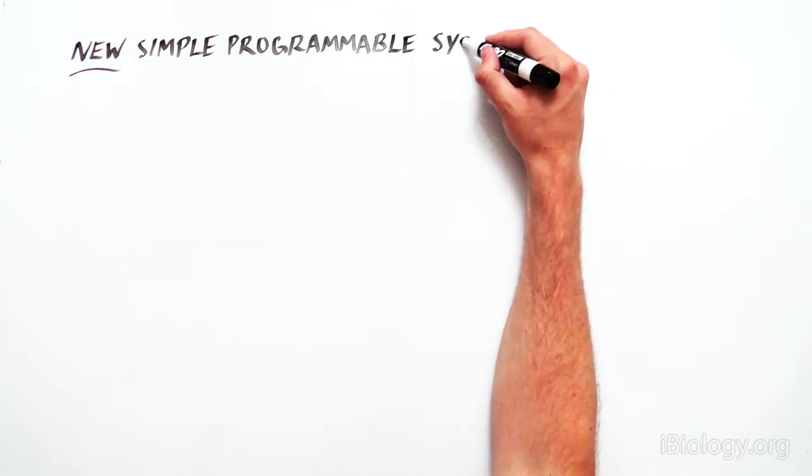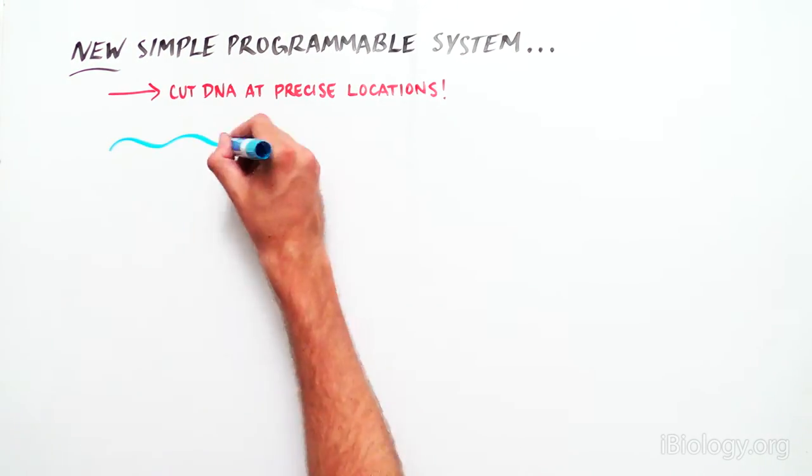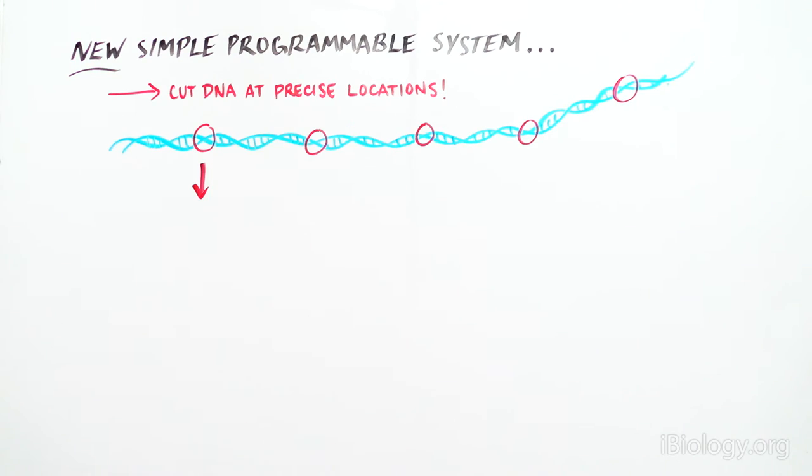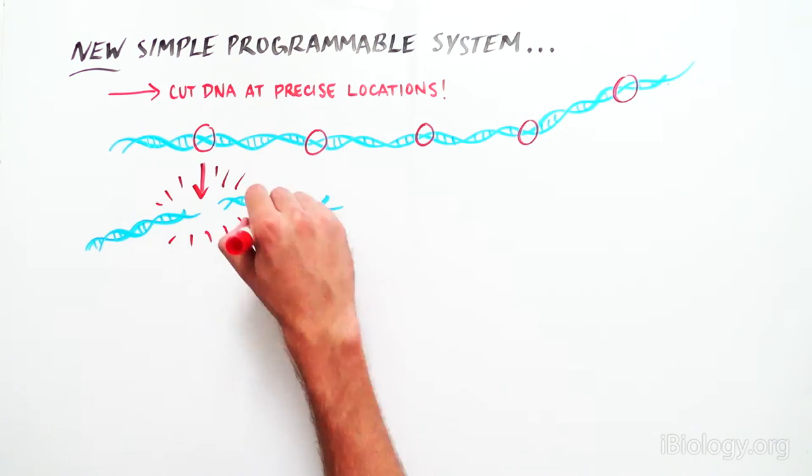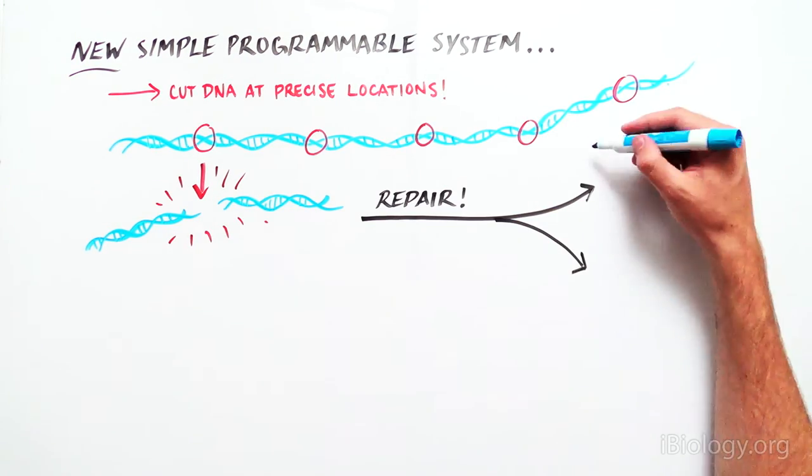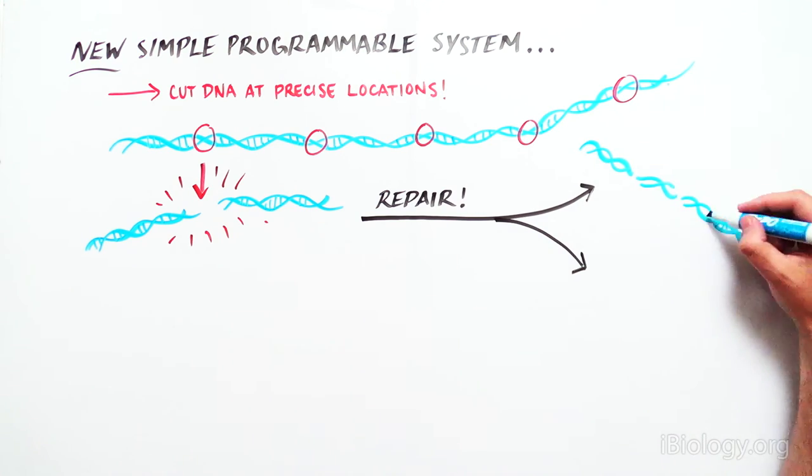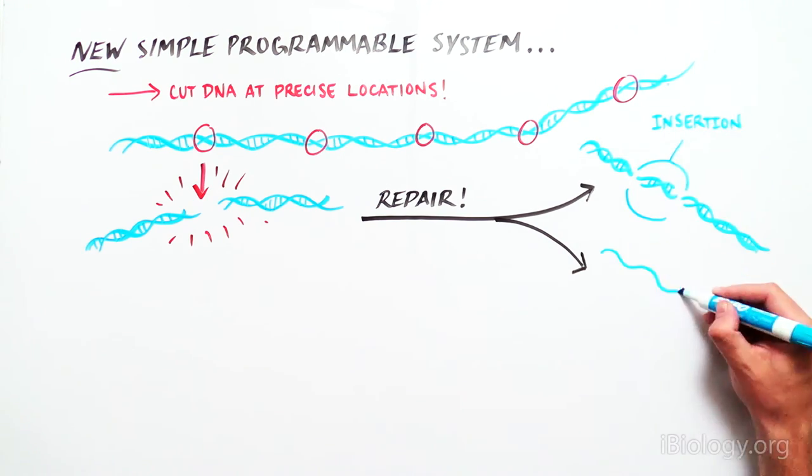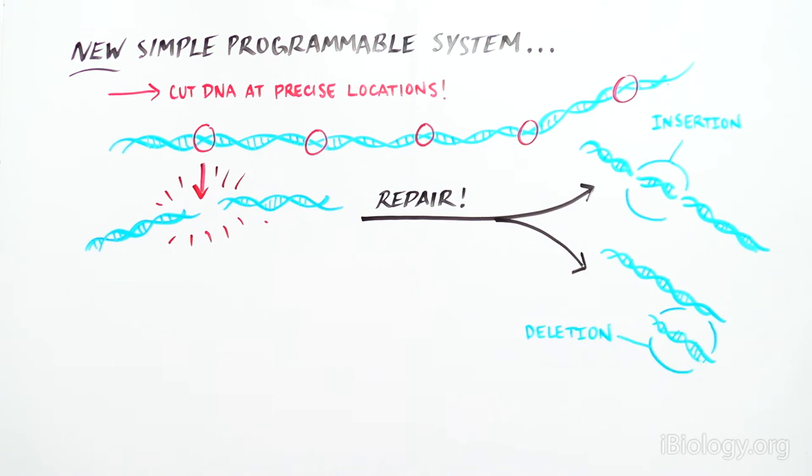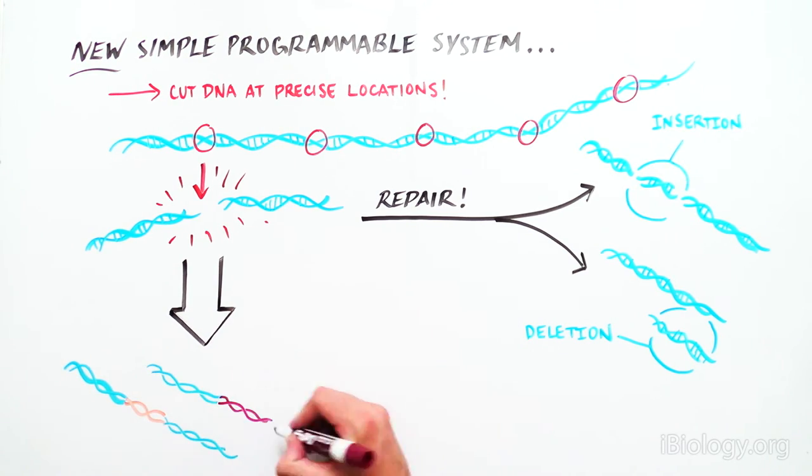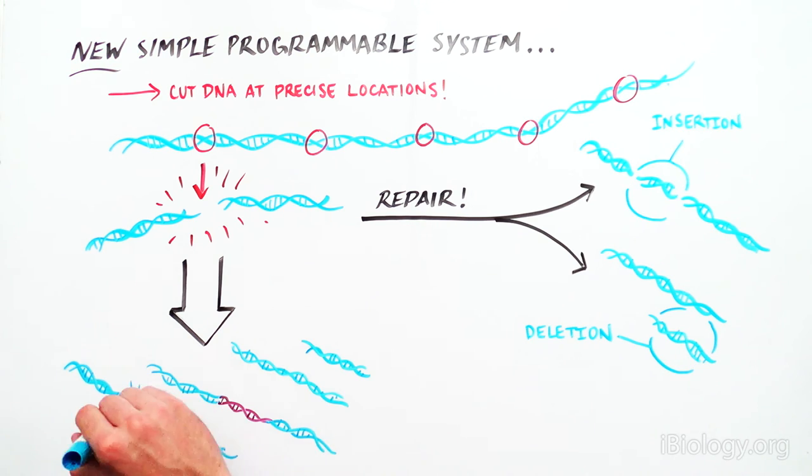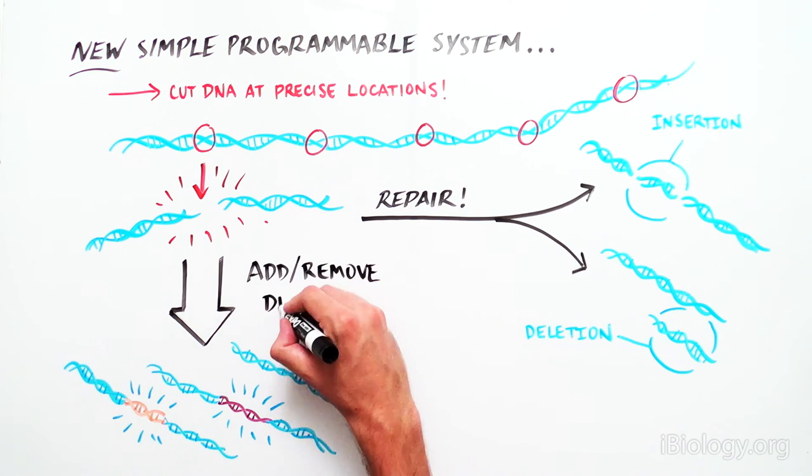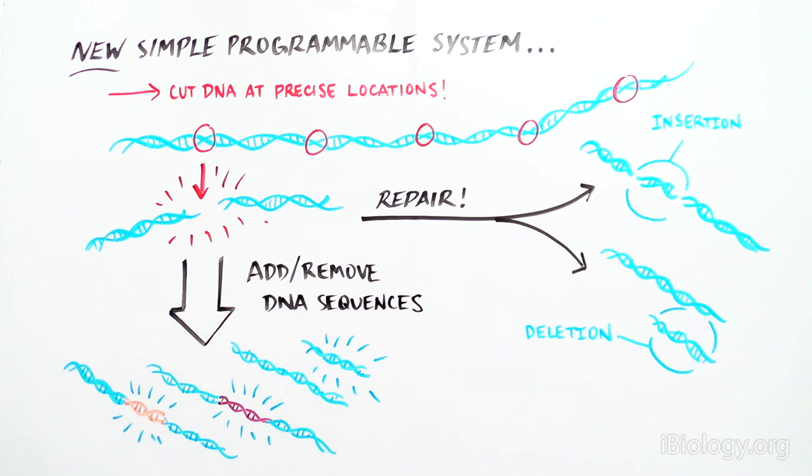By having this simple and easily programmable system, scientists can now induce breaks in the DNA at precise locations. When the cell tries to repair the broken DNA strands by ligating them back together, it often causes a small insertion or deletion that changes the DNA sequence. Scientists can take advantage of this process to add or remove specific DNA sequences at the site of the break.